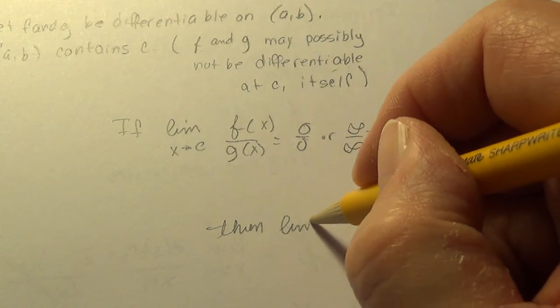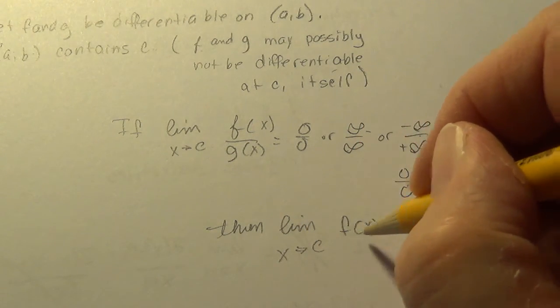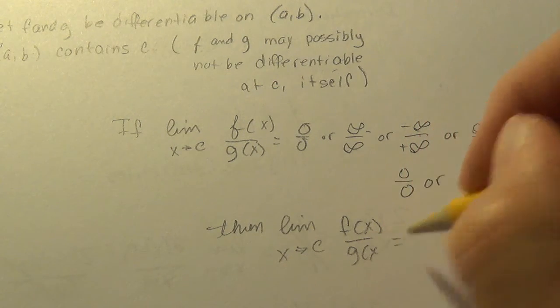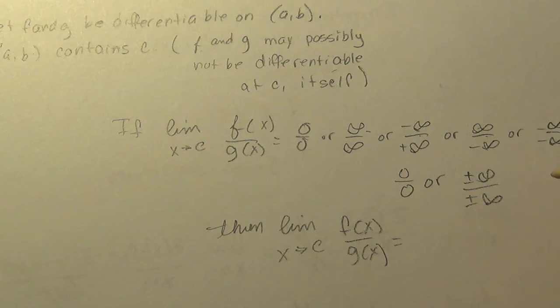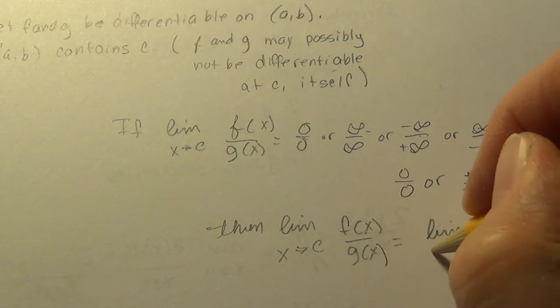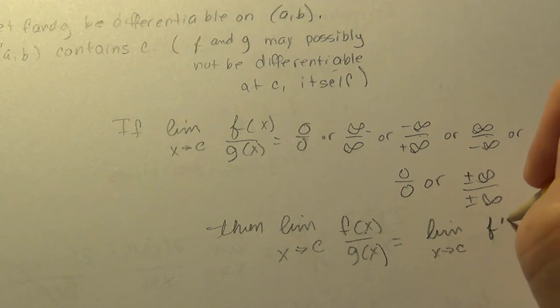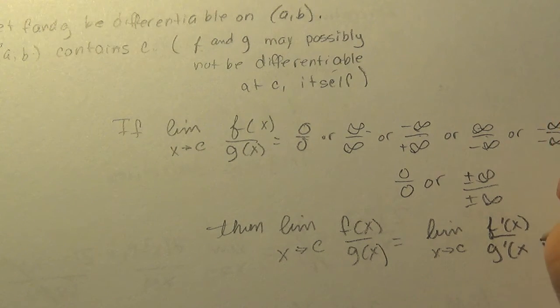The limit as x approaches c of f(x) over g(x) equals the limit as x approaches c of f prime of x over g prime of x. This is hugely helpful and we'll see why in a minute.